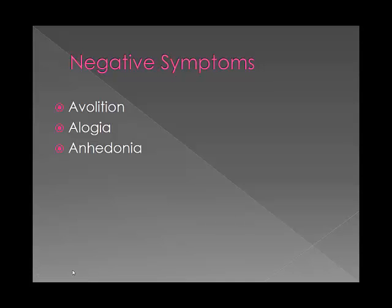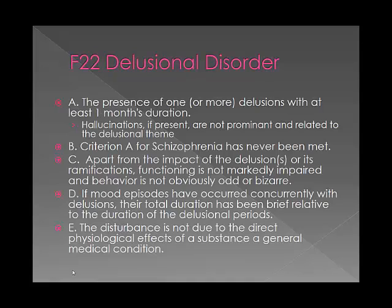Negative symptoms include avolition, which is a lack of drive or wanting to complete things; alogia, which is poverty of speech; and anhedonia — just not wanting to do anything. This is straight out of your DSM, so I'm not going to spend a lot of time on it. But remember, this chapter starts on page 87, and make sure you go through and read the details carefully.